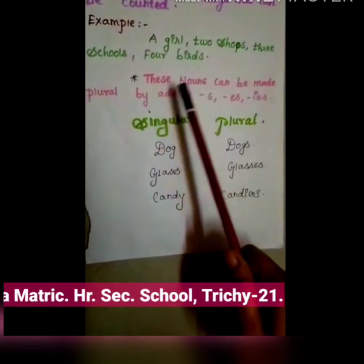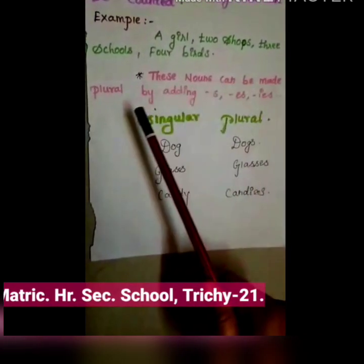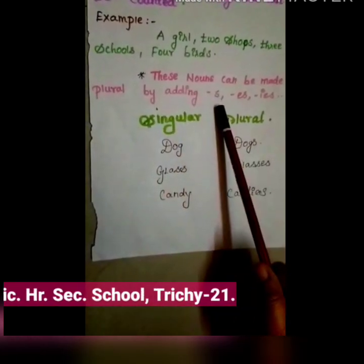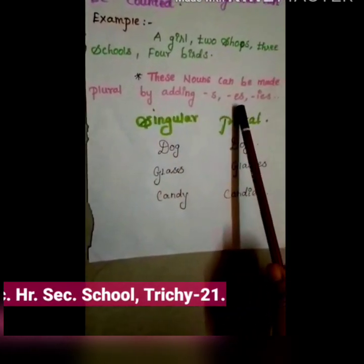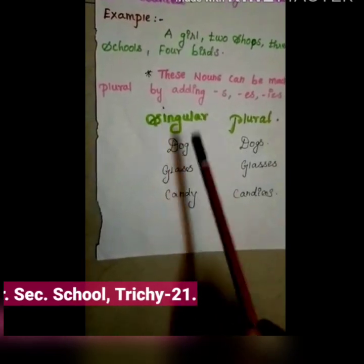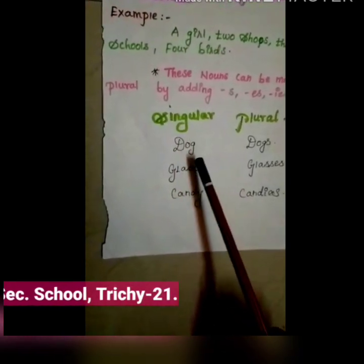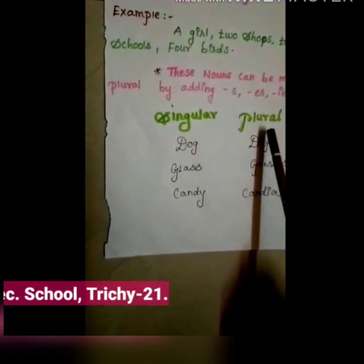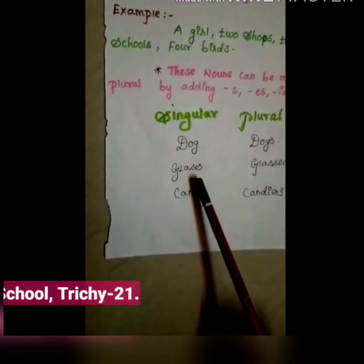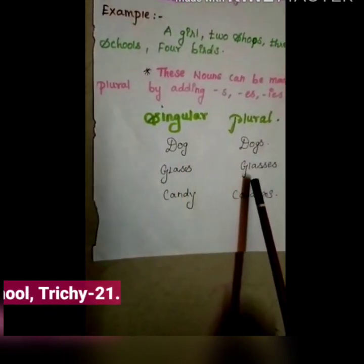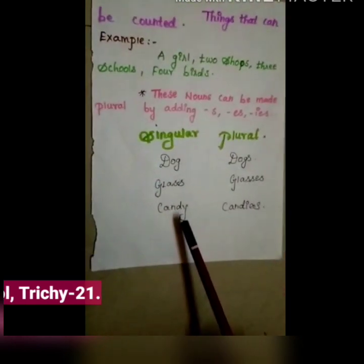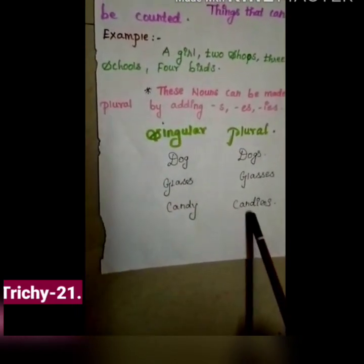These nouns can be made plural by adding 's', 'es', or 'ies.' Singular: dog — plural: dogs. Glass — plural: glasses. Candy — plural: candies.